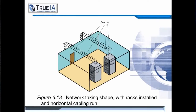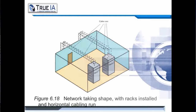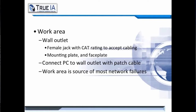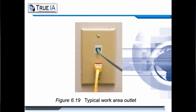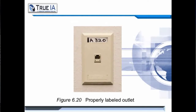Our network is really starting to take shape. The racks are installed, the horizontal cabling is run. Now all we have to do is define our work area. The work area is a wall outlet — it will consist of a female jack with a cat rating, a mounting plate, and face plate. This is where you will connect the PC to the wall outlet with the patch cable. When troubleshooting, you'll usually start in the work area as the source of a lot of network failures. It's also important to label the face plate.